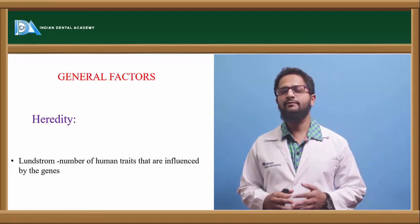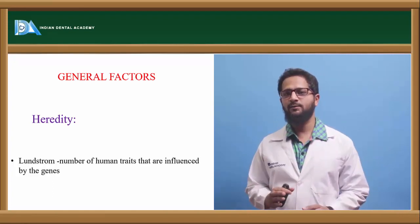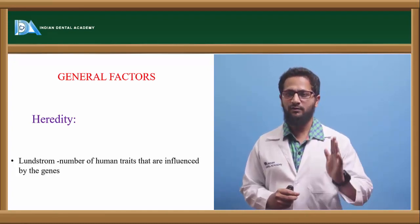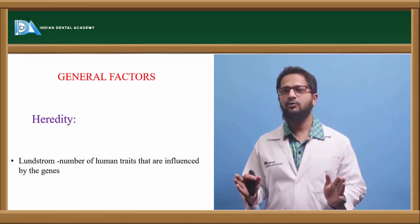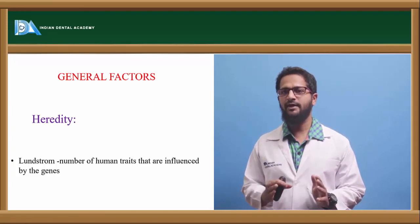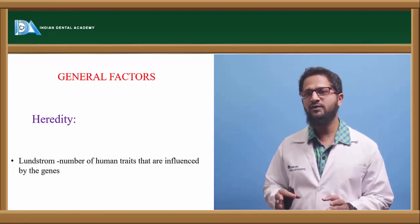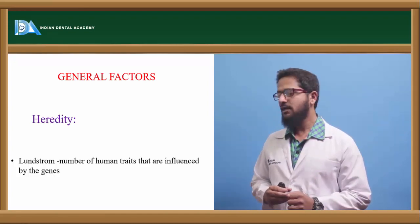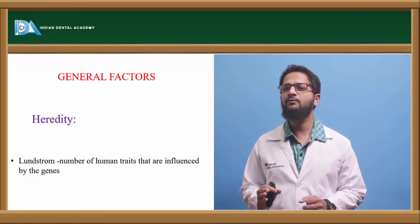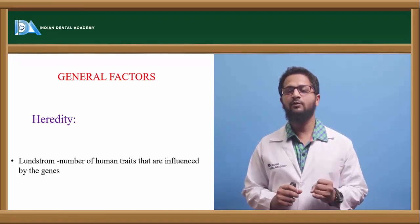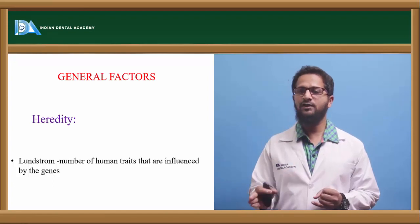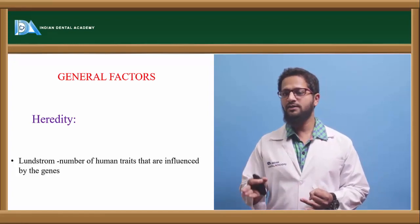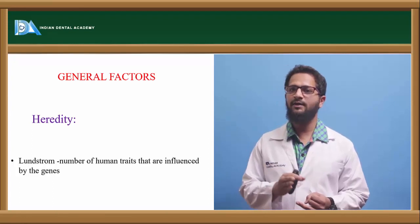Heredity: we commonly come across families where there are many similarities among members. An offspring is a by-product of two different genetic combinations — father of one genetic makeup, mother of another. Both genes combine and produce an offspring. So it is quite logical that offspring usually have many similarities to their parents, due to the transfer of genes from parents to the child.